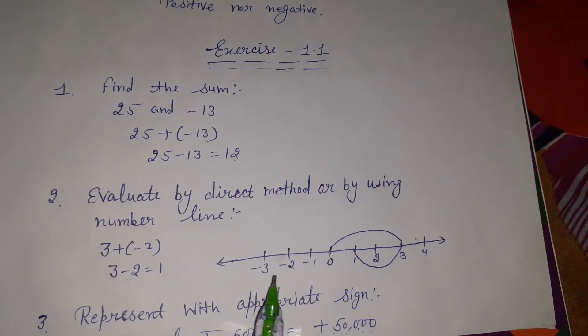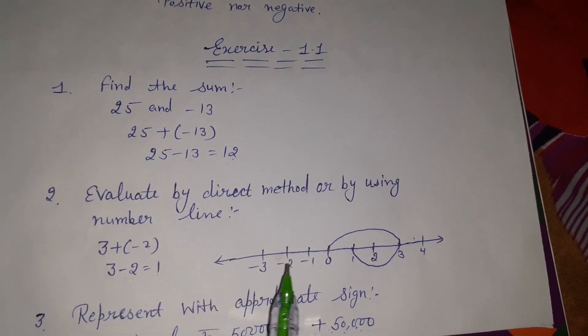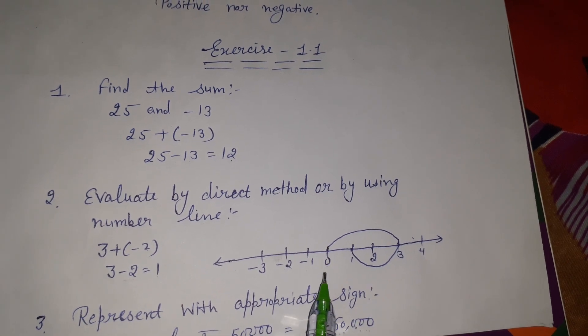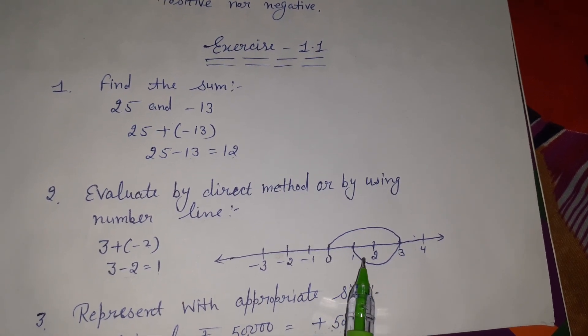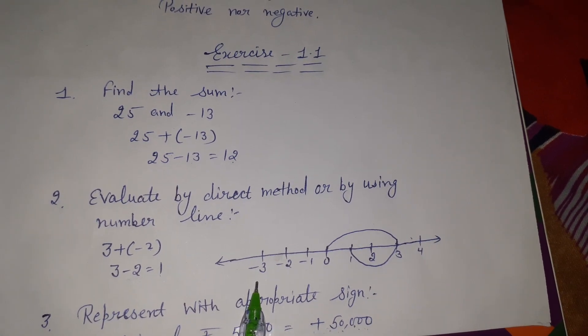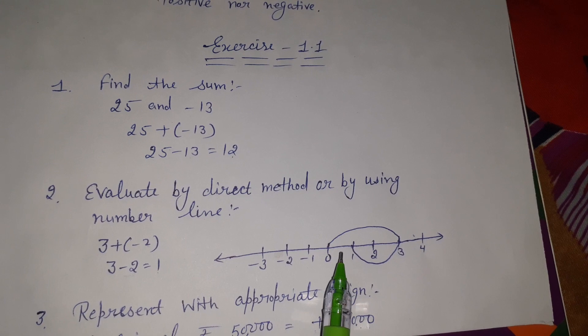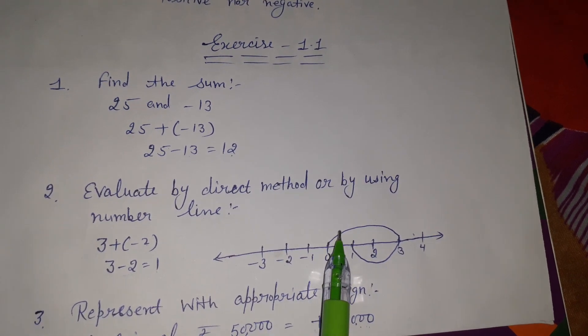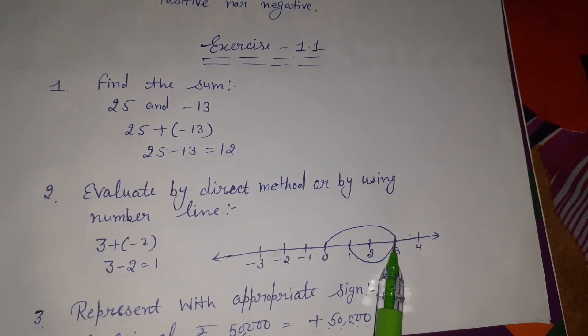How to show on number line? First draw a line. In the center put 0. Right side has positive numbers and left side has negative numbers. First we have 3, which is positive. So from 0, we go right to 3.